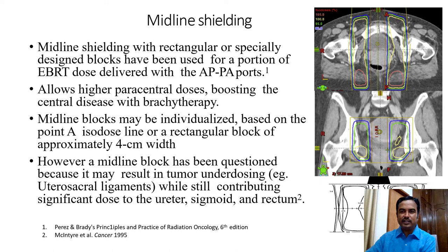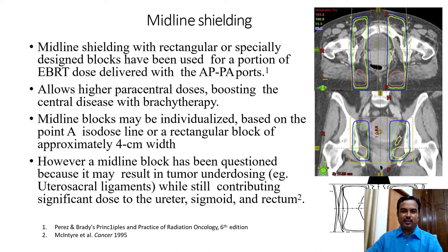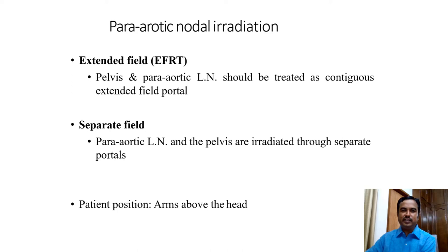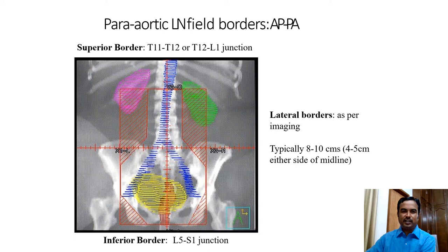Apart from the regular treatment, we also used to do midline shielding in conventional treatments. These midline shields were used to boost the nodal areas, mostly after brachytherapy. We used customized or standard blocks; the width of the block in the center layer comes around four centimeters. The intention is to increase the dose to the parametrium. This midline shielding technique is used mainly for cases where brachytherapy or template brachytherapy cannot be performed, though it is a controversial area as it shields the primary area. We also designed fields for para-aortic node irradiation in the conventional technique.